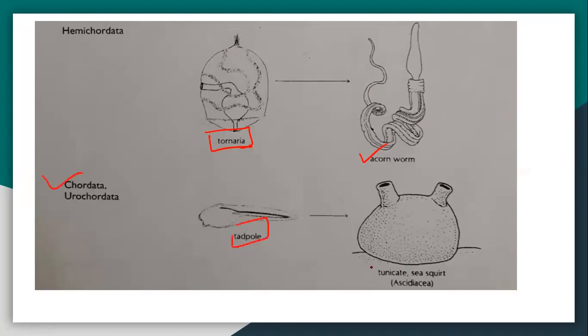In hemichordata, the larval stage is the tornaria larva. The adult stage becomes acorn worm. In chordates, the tadpole is the larval stage, and in tunicates or sea squirts or ascidiacea as well.